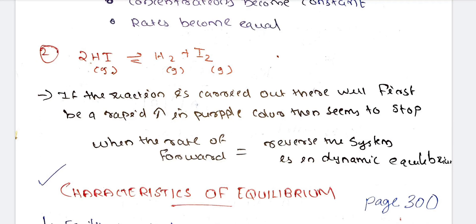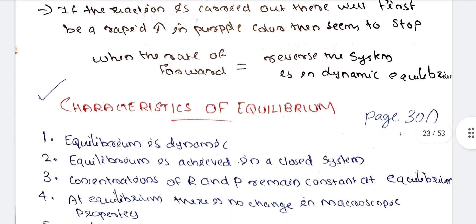If the reaction is carried out, there will be first a rapid increase in the purple color, then seems to stop. When the rate of the forward reaction is equal to backward reaction, then it will stop.